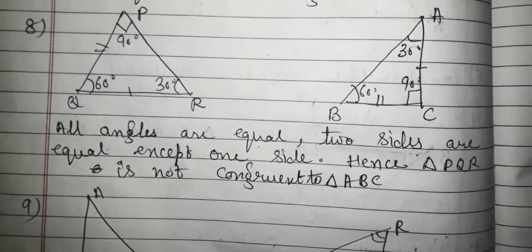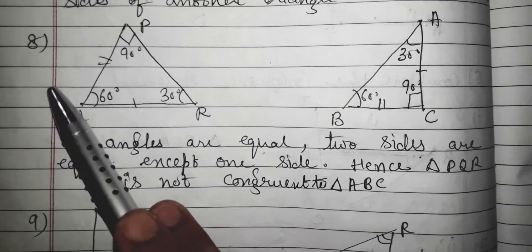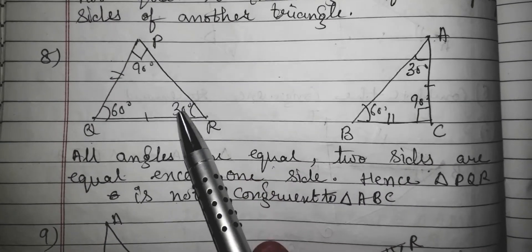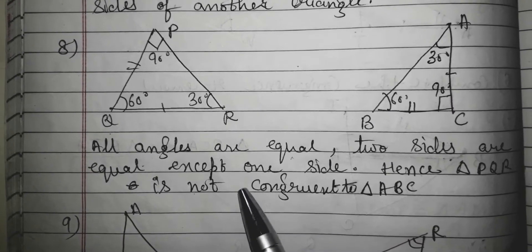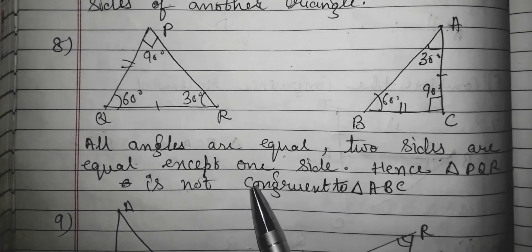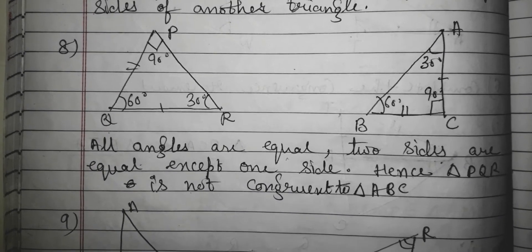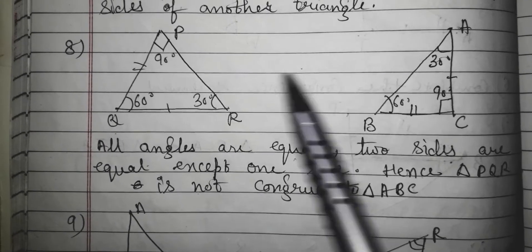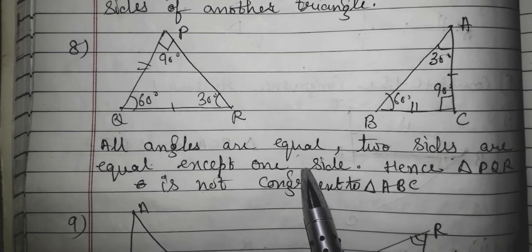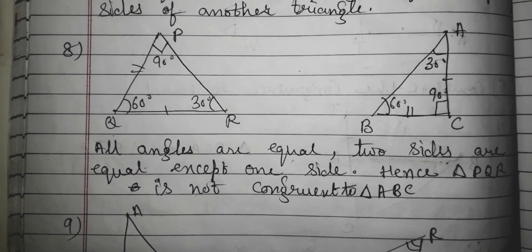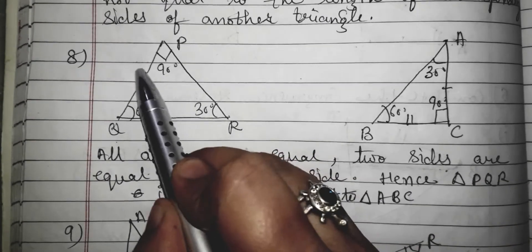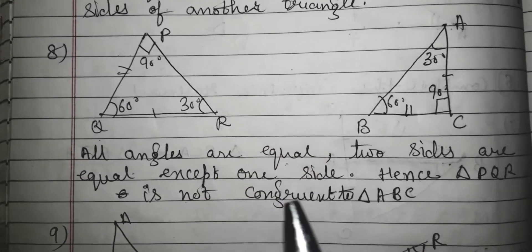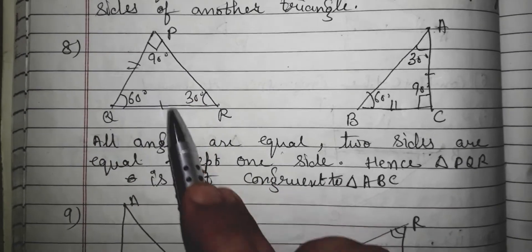Students, there is no need to do question 7 — there is nothing in that question. Let's move to question 8. Two triangles are given: one has angles 90°, 60°, and 30°, and the other also has angles 90°, 30°, and 60°. In this question, all angles are equal in both triangles, and two sides are also equal — three angles and two sides.